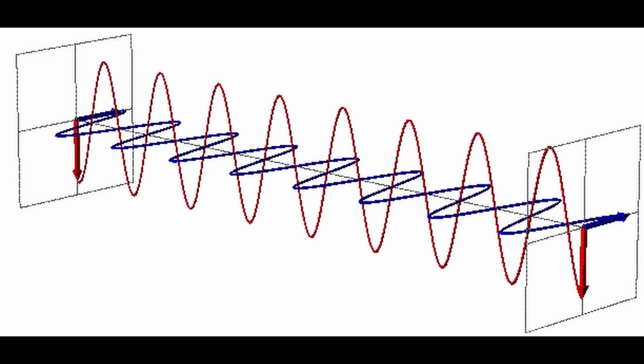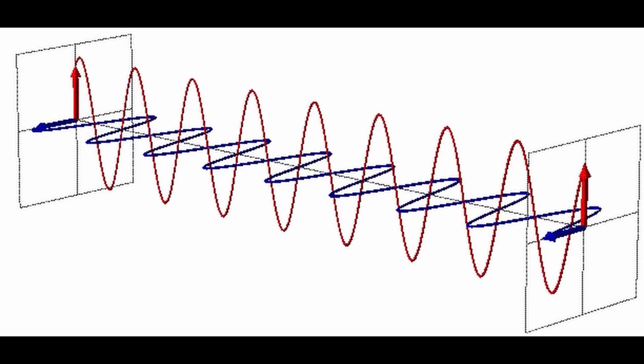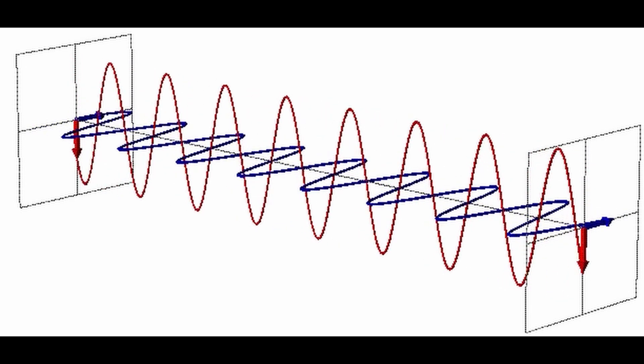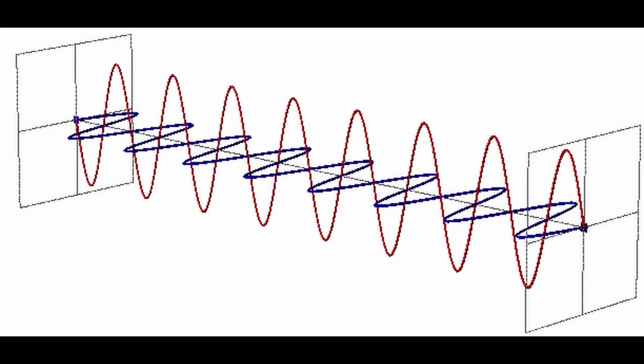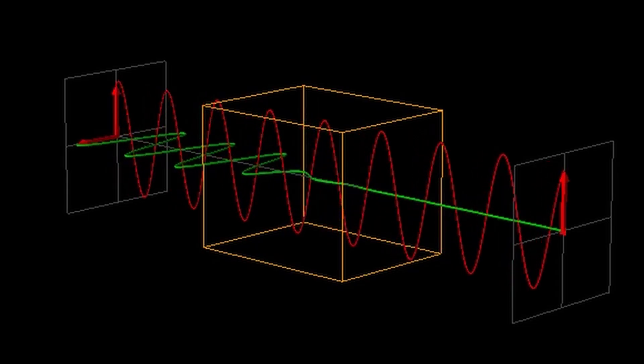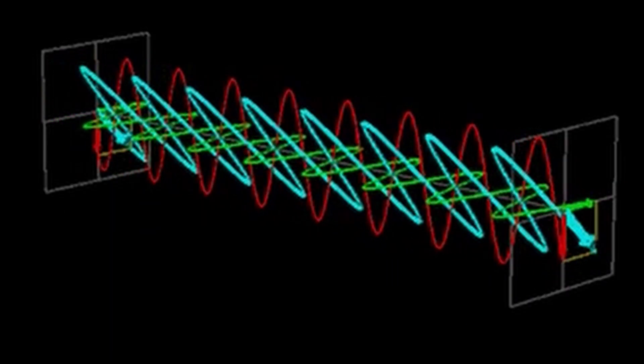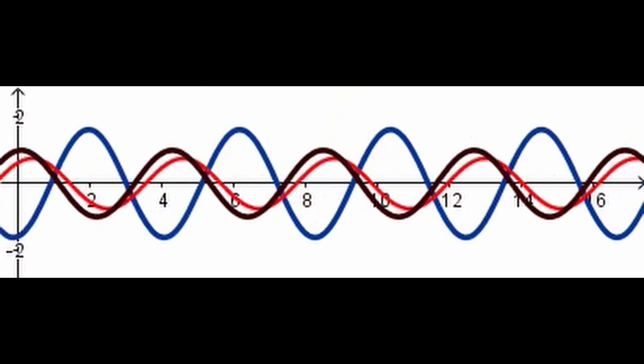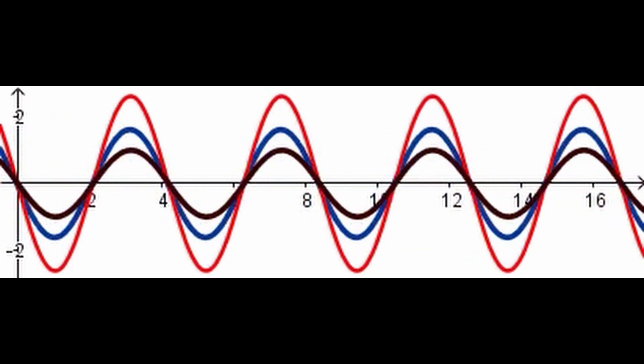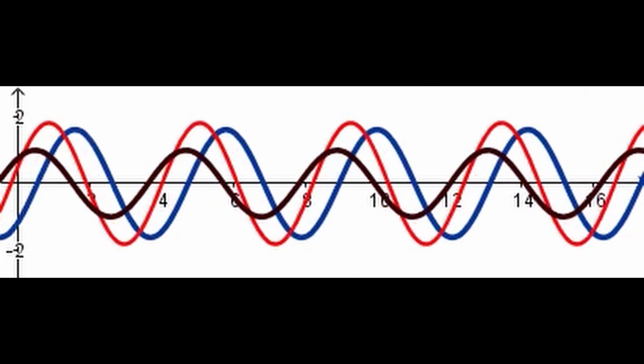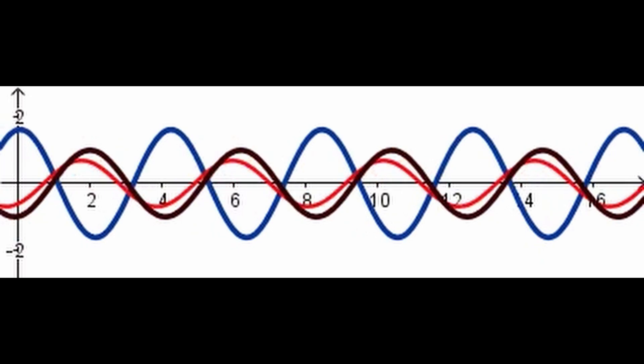Removing noise from an electrocardiogram signal: An electrocardiogram (ECG) is a device that measures the electrical activity of the heart. However, the ECG signal can be corrupted by noise from various sources, such as power lines, muscle contractions, or other devices. To remove the noise, we can apply the Fourier transform to the ECG signal and filter out the unwanted frequencies that do not correspond to the heart rhythm. Then, we can use the inverse Fourier transform to recover the clean ECG signal.